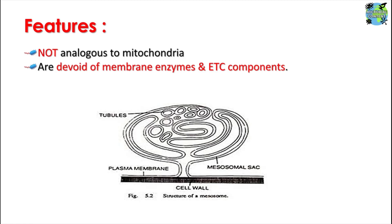You can see here this invaginated structure which is filled with the tubules and sacs inside the invagination. This was about the structure of the mesosome, whose exact function is not known. Although it was considered in relation to cell division, the exact function is still not known about the mesosome.